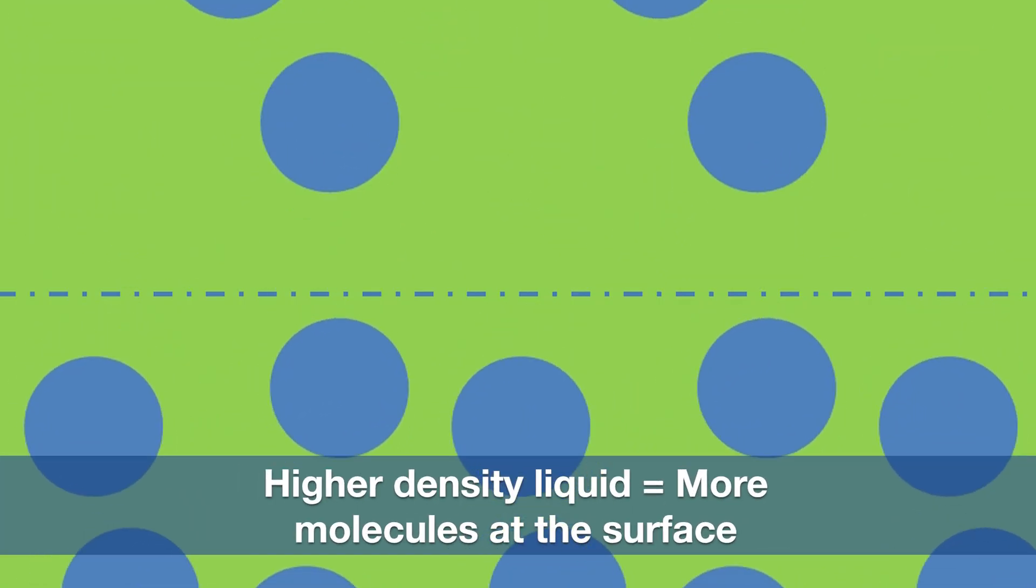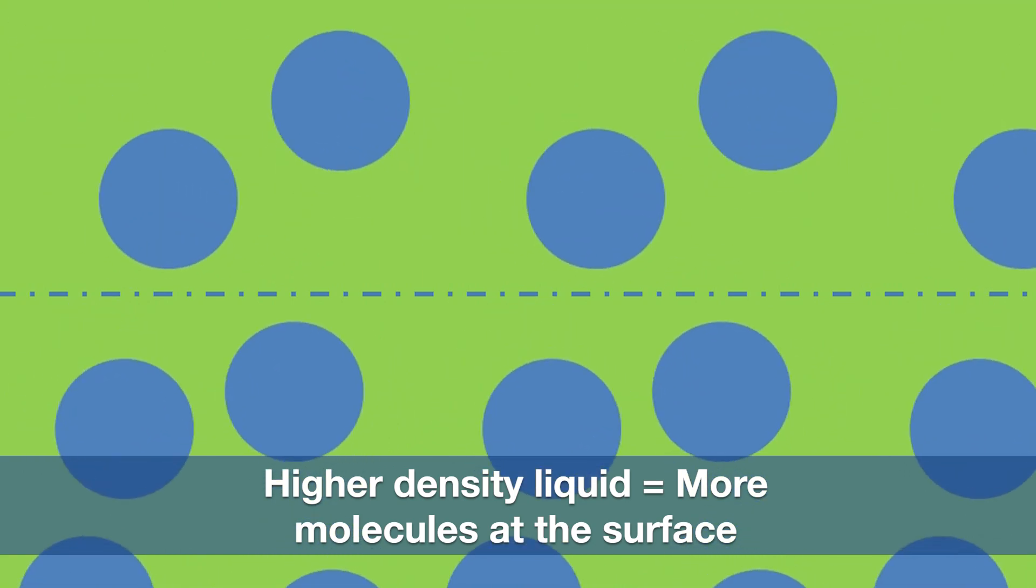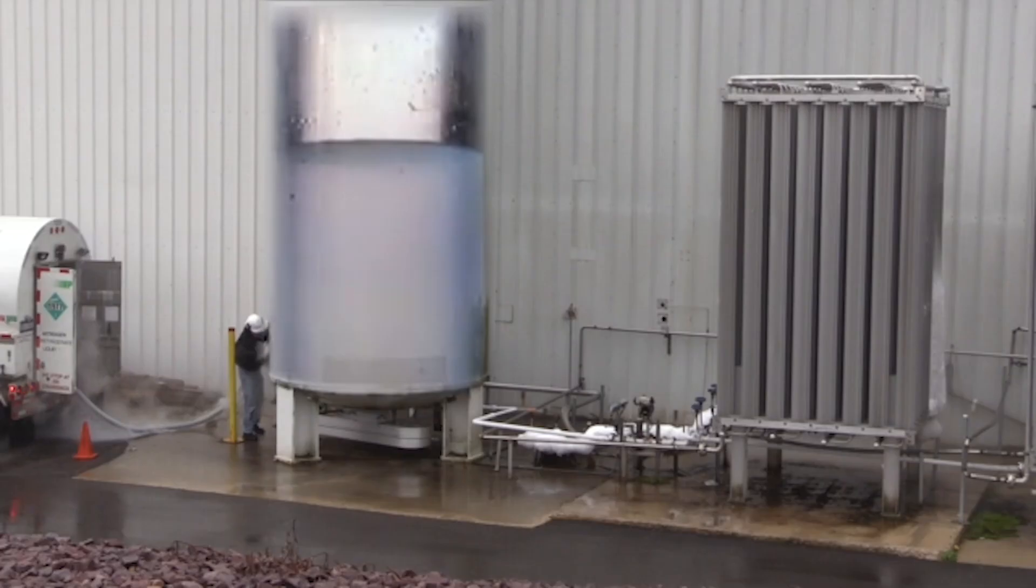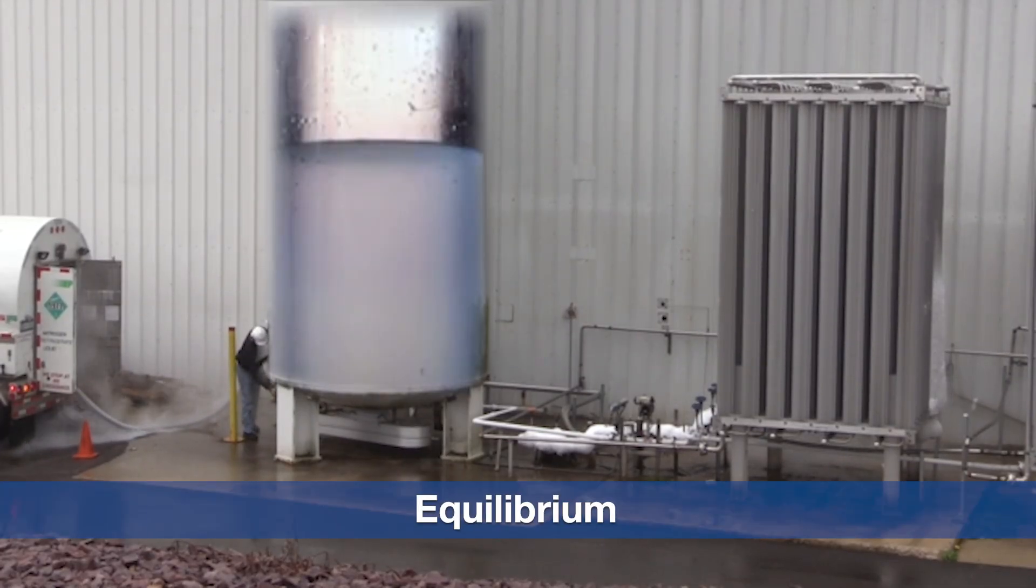The higher density a liquid has, the more molecules at the liquid surface there are at any given time. The kinetic energy, or speed, of the molecules ensures that these molecular collisions continue to occur, which keep the liquid in the liquid state and the vapor in a vapor state. Since these collisions are equal, we say this system is in thermodynamic equilibrium.